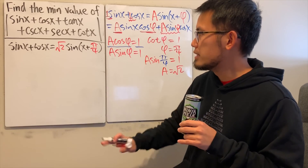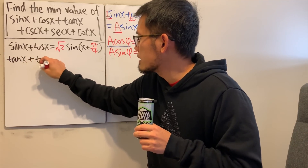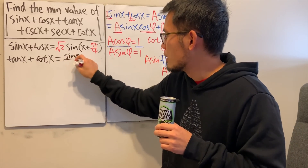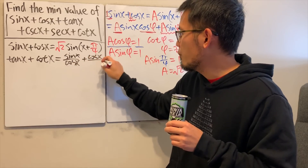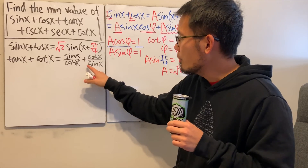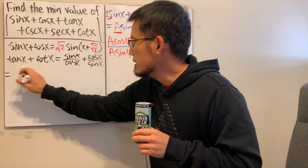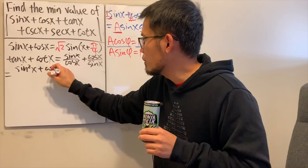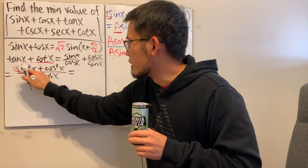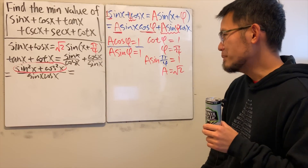Now let's pair up the other trig functions — tangent and cotangent. Tangent x is sine x over cosine x, and cotangent x is cosine x over sine x. Combining the fractions, we get sine²x plus cosine²x on top, over sine x times cosine x on the bottom. The top is nicely equal to 1, so tangent x plus cotangent x equals 1 over (sine x · cosine x).